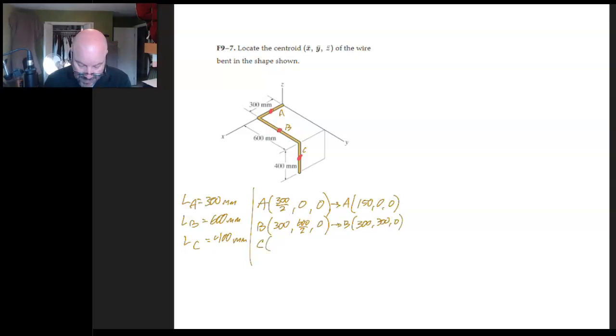And finally, point C here. C is all, all of it is located, or point C is located at the 300 millimeter mark. And the y component is located at the 600 millimeter mark, and it's halfway down the length. So that becomes this, 300, 600, minus 200.